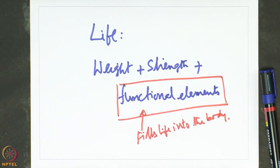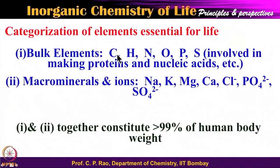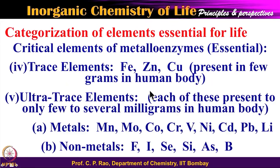As you can see from this slide, we have bulk elements — carbon, hydrogen, nitrogen, oxygen, phosphorus, and sulfur — and we have macrominerals like sodium, potassium, magnesium, chloride, phosphate, sulfate, and so on. We also have several trace and ultra-trace elements: iron, zinc, and copper are trace elements because they are present in terms of a few grams for a body weight of 70 kilograms, whereas ultra-trace elements are those where we have only a few milligrams for the total body weight of 70 kilograms. Ultra-trace elements can be further divided into metallic and non-metallic. So this covers the compositional aspects.